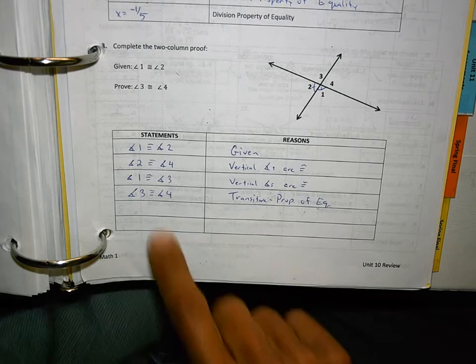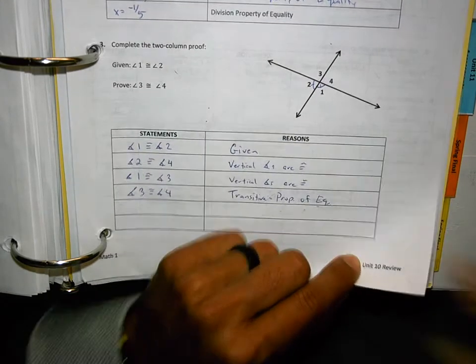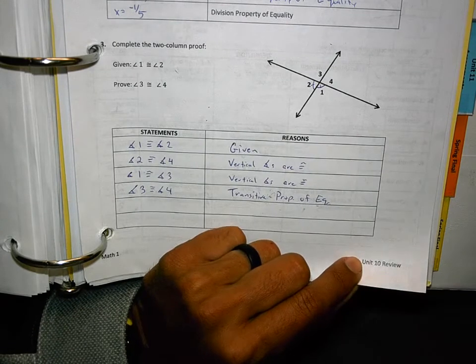Somebody asked me, do I have to fill in every single box when I do a two-column proof? No, you do not. It's there in case you need the extra room.